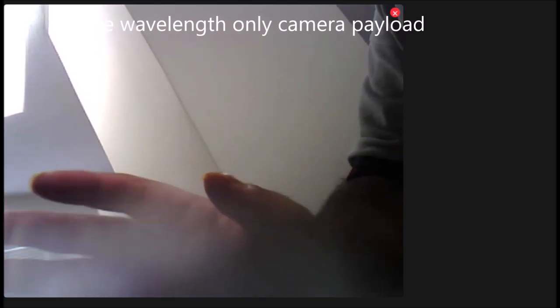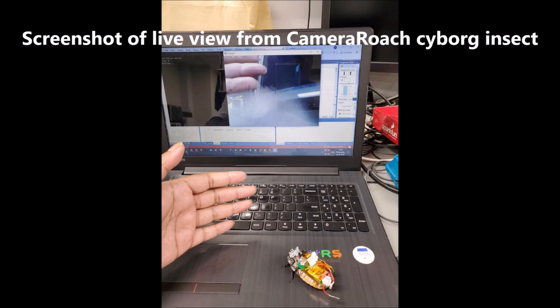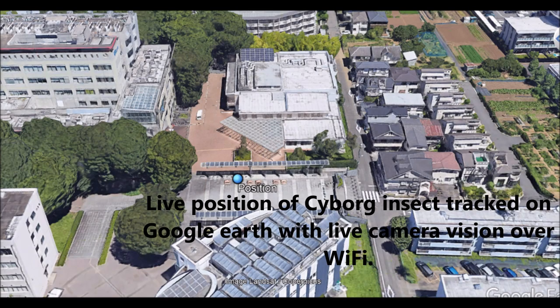In order to get location awareness in one of the backpacks, we have integrated the world's lightest origin GPS receiver system on the cockroach. We got position as well as camera data live over Wi-Fi network spread across the university campus and are also able to navigate the cockroach like a drone.